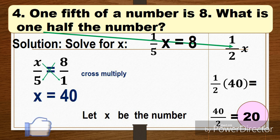One times x is x over five equals eight over one. Why one? Because the denominator of a whole number is one. Okay, and then we're going to cross multiply.